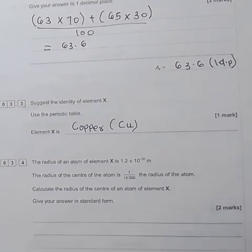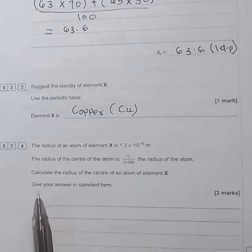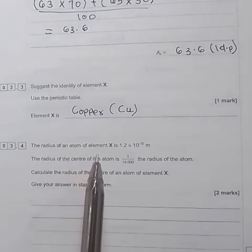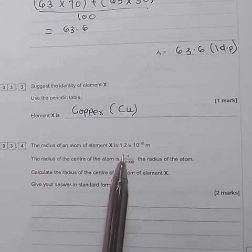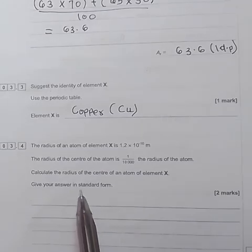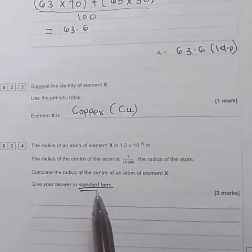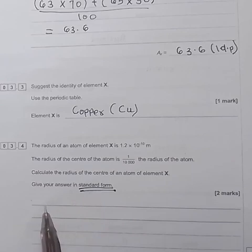Question number 4, which is actually the final question on this section of number 3. The radius of an atom of element X is 1.2 times 10 raised to power negative 10 meters. The radius of the center of the atom is 1 over 10,000 of the radius of the atom. Calculate the radius of the center of an atom of element X. Give your answer in standard form. Remember to give your answer in standard form.